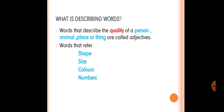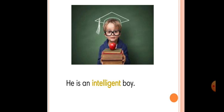Words that describe the quality of a person, animal, place, or thing are called adjectives. I repeat: words that describe the quality of a person, animal, place, or thing are called adjectives. So what are the words? The words that refer to shape, size, color, and numbers — repeat children: shape, size, colors, numbers. Very good!